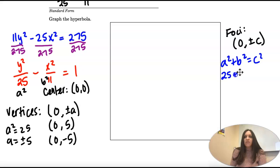A squared is 25. B squared is 11. If I add those together, I get 36. So my c-values are plus or minus 6.